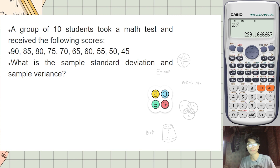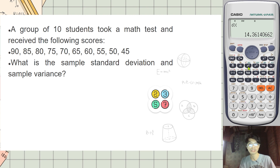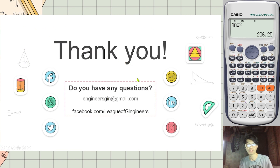For the population standard deviation and population variance, press Shift 1, then Var, and select the σx symbol — the one that looks fancy, number 3. That is the population standard deviation. Press equals and the answer is 14.36. For the population variance, simply square that value and you get 206.25.